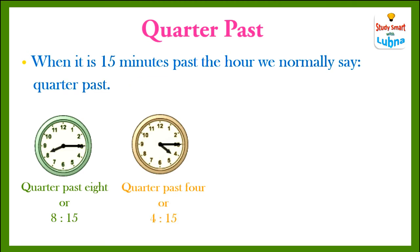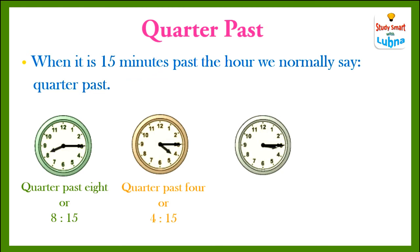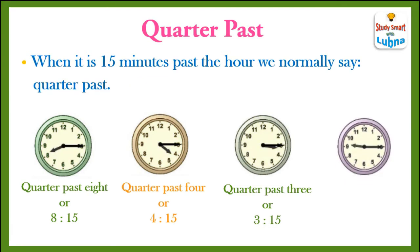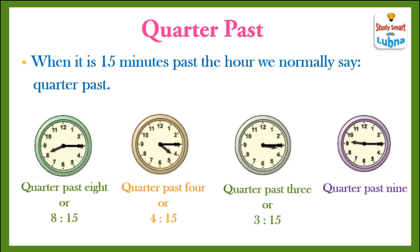Quarter past: when it is 15 minutes past the hour, for example 4:15. Look at the third analog clock — what time is it? It is quarter past 3, or 3:15. Look at the fourth analog clock — what time is it? It is quarter past 9, or 9:15.